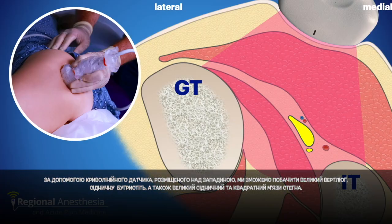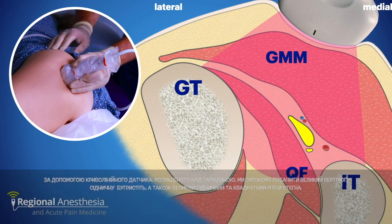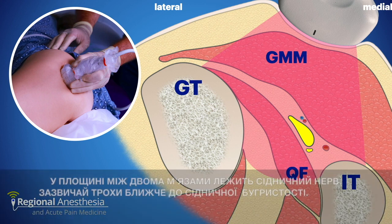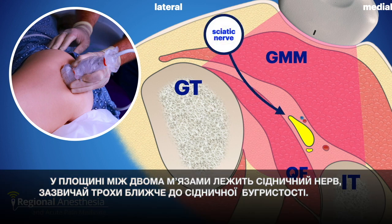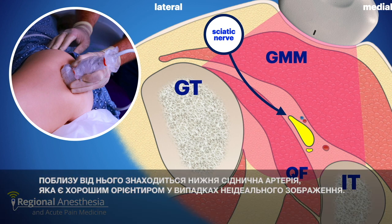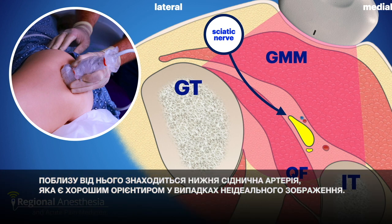With a curvilinear probe placed over the trough, we'll be able to see the greater trochanter, the ischial tuberosity, and the gluteus maximus and quadratus femoris muscles. In the plane between the two muscles lies the sciatic nerve, usually somewhat closer to the tuberosity side. Close to this is the inferior gluteal artery, which is a good landmark in cases where the imaging is less than ideal.